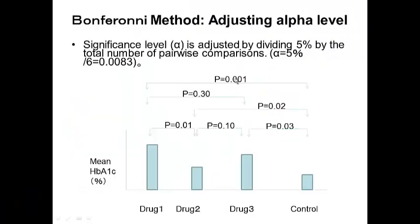So far, we have been talking about adjusting for p-values. There is also a method of adjusting for alpha level. This is simply doing the same thing as adjustment for p-values, but in this method, instead of manipulating p-values, you change the significance level — typically 5% — and you divide the alpha level by the total number of comparisons.